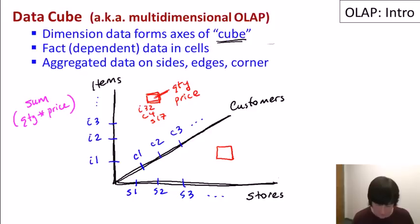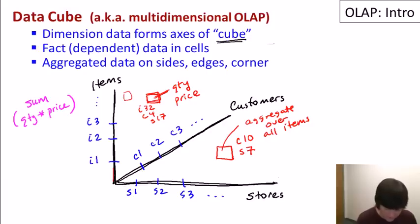So now let's consider a cell on the face of the cube. So again, I'm not drawing this very well, but let's assume that this is on the bottom face of the cube. So this is for a particular customer, say customer 10 and a particular store, say store 7. And then, since it's on the bottom of the cube, so we didn't go up this dimension here, it considers all items for customer 10 and store 7. So this will be the aggregate overall items for that particular store and customer. And we'd have similar values on the other faces of the cube. So this face over here, for example, would be for a particular item and customer over all stores. And then on the front face of the cube, if you can imagine that, would be for a particular item and store over all customers.